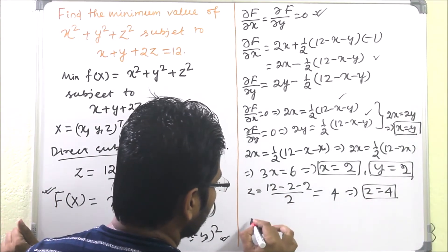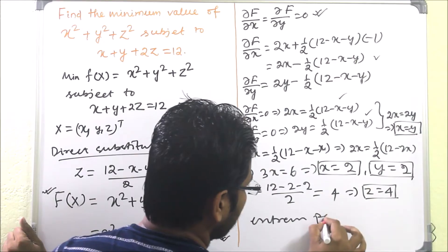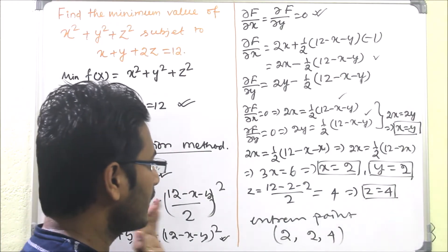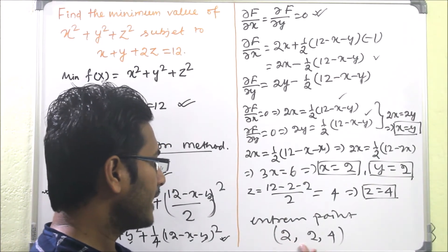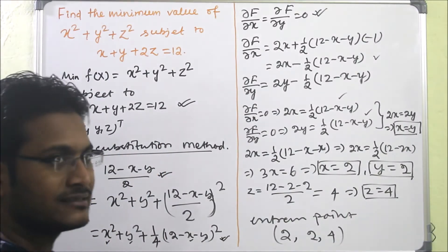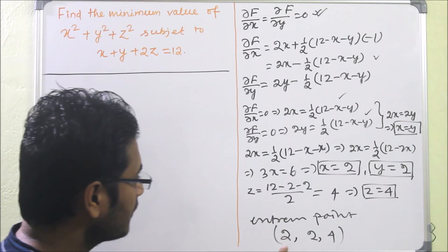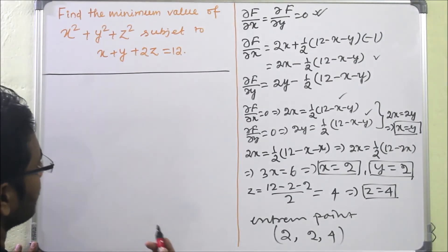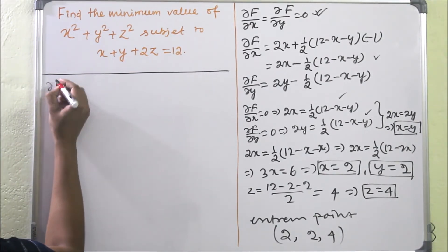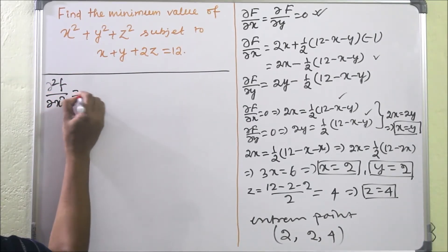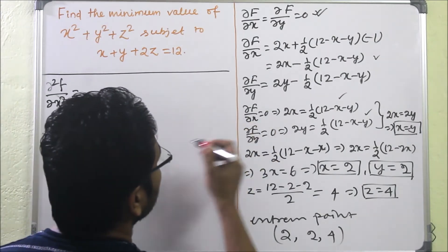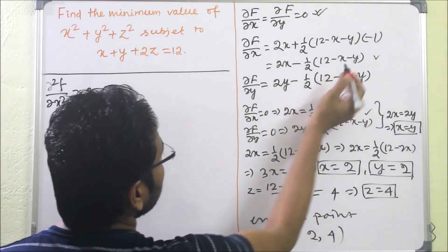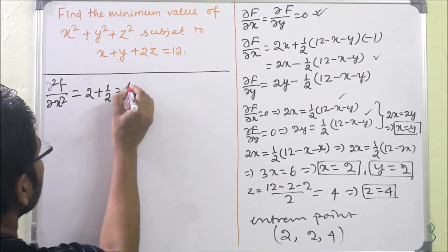We have found the extreme point (2, 2, 4). Now we must test the nature at this point using the sufficient condition — the Hessian matrix. We compute ∂²F/∂x² = 2 + 1/2 = 5/2, and similarly ∂²F/∂y² = 5/2.